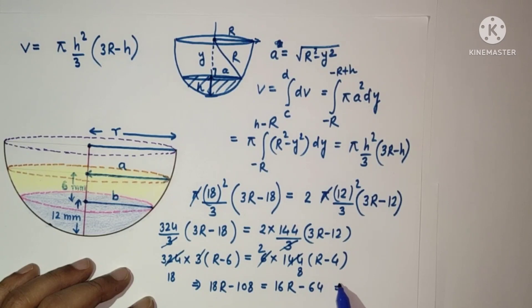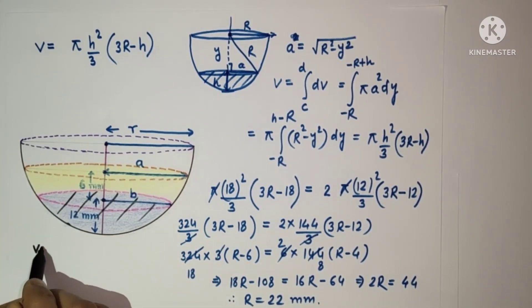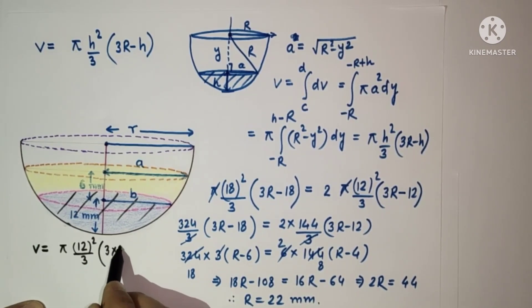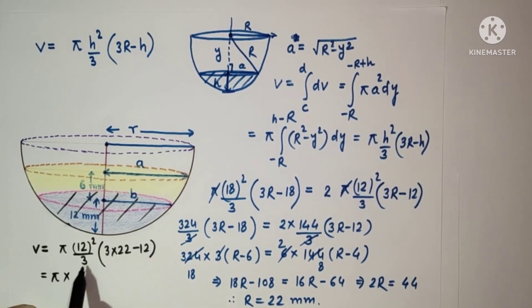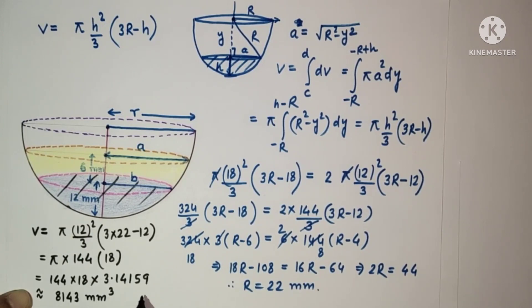The required volume is pi times 12 squared by 3 times 3 times 22 minus 12, which equals 144 times 18 times 3.14159.